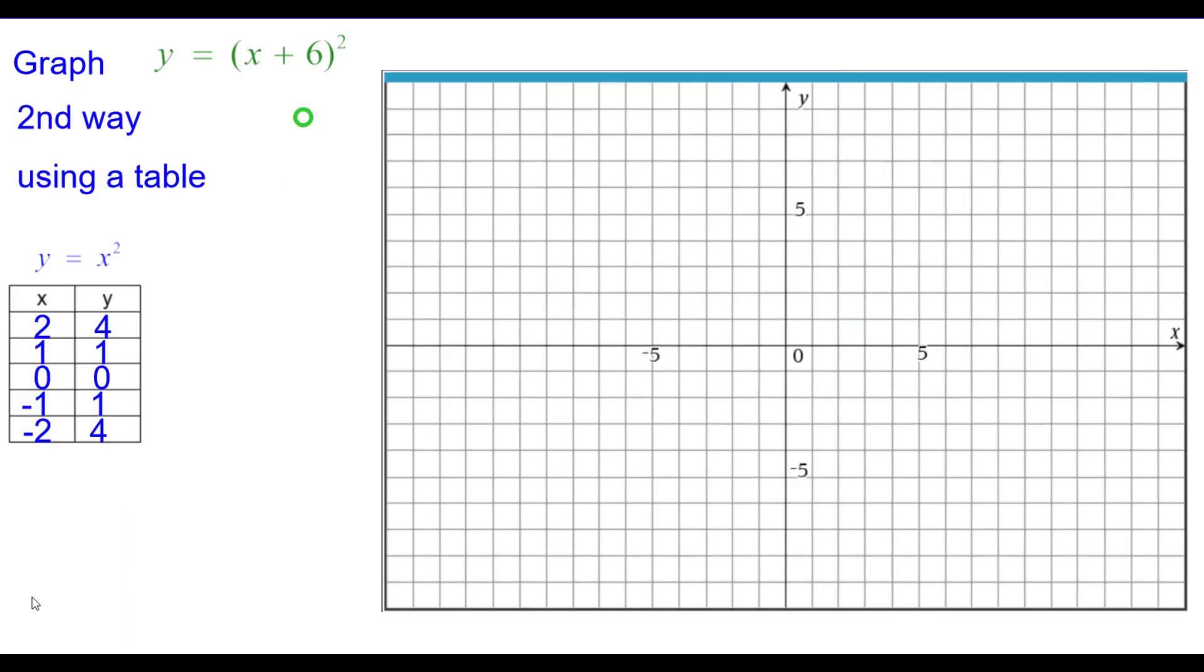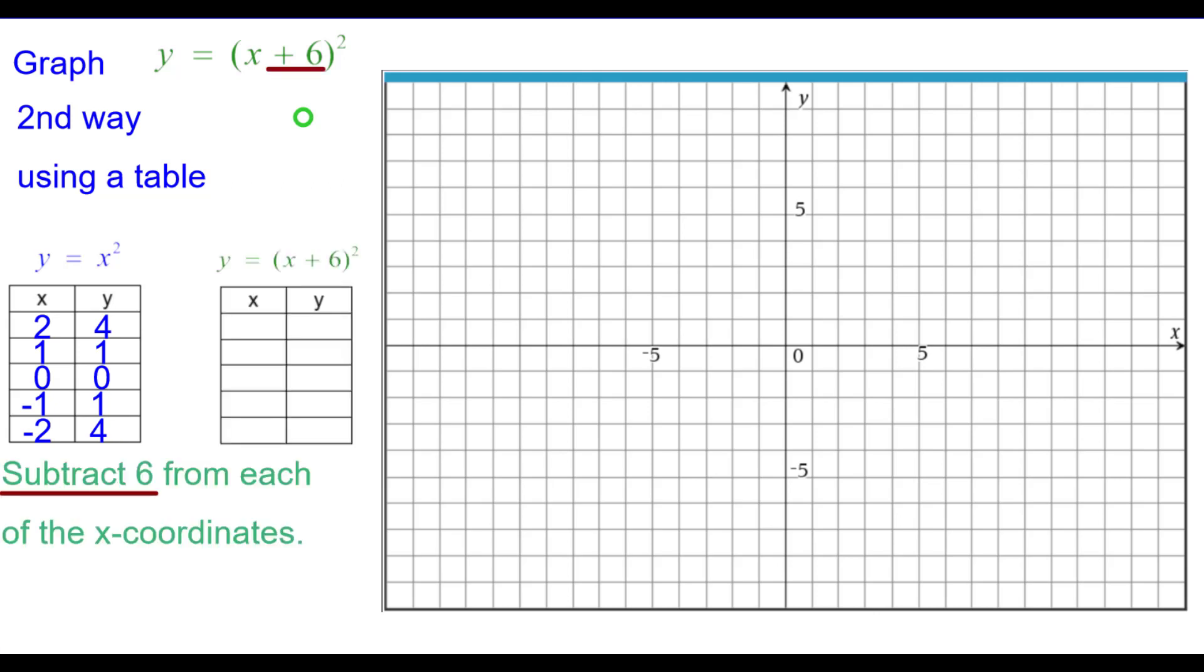The second way is using a table and here we have our standard y equals x squared table of 5 points. We need to subtract 6 from each of the x coordinates.